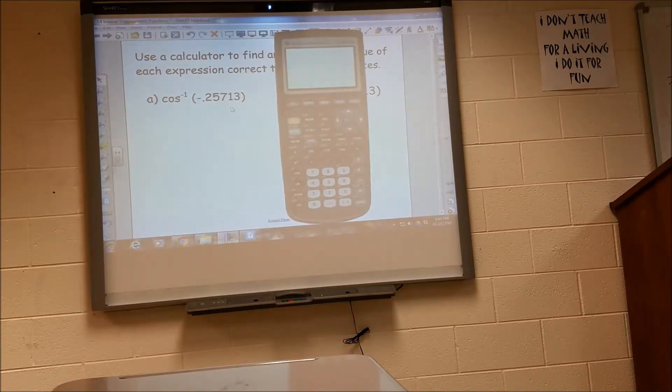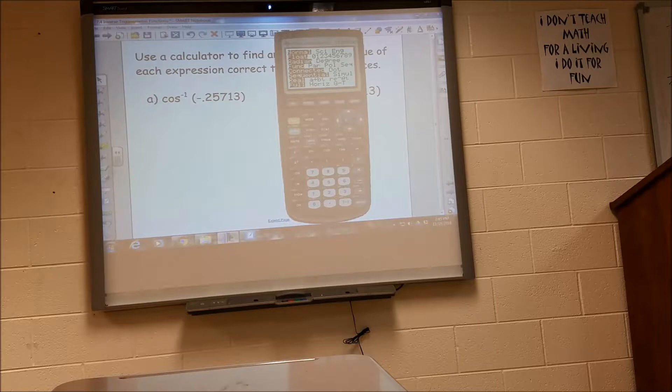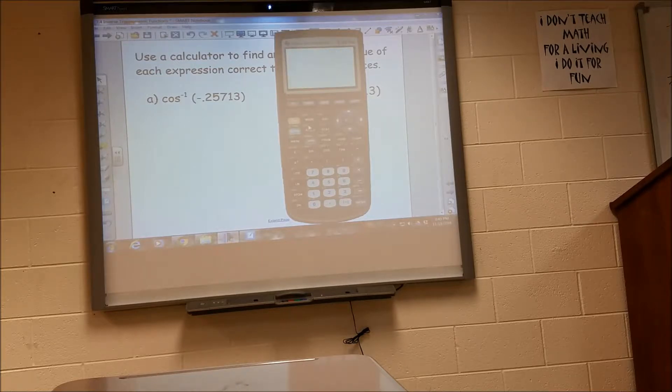So the first one they have is inverse cosine. I'm going to make sure my mode is in radian mode. You can switch it between degree and radian, but I want it in radian mode. And then I just do second cosine of negative 0.25713. And we get a value of 1.83045. Remember, they want it rounded to five decimal places.